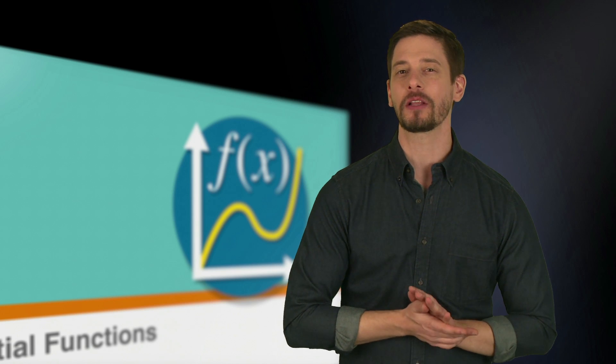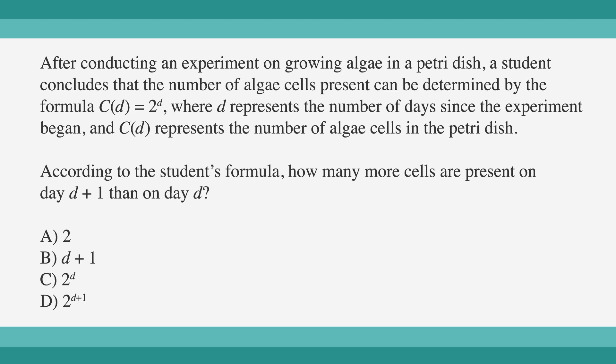Let's take a look at a question similar to what you might see on the SAT. After conducting an experiment on growing algae in a petri dish, the student concludes that the number of algae cells present can be determined by the formula C(d) = 2^d, where d represents the number of days since the experiment began, and C(d) represents the number of algae cells in the petri dish. According to the student's formula, how many more cells are present on day d+1 than on day d? The answer choices are: A) 2, B) d+1, C) 2^d, and D) 2^(d+1).